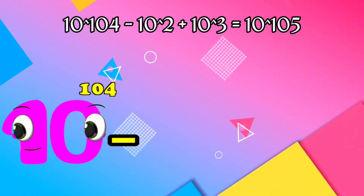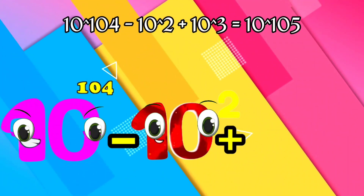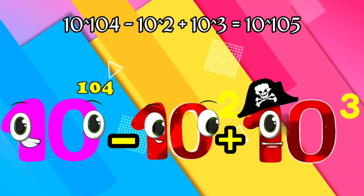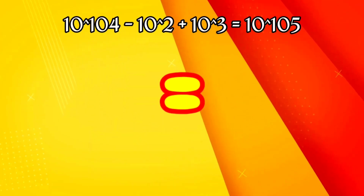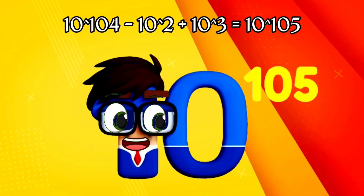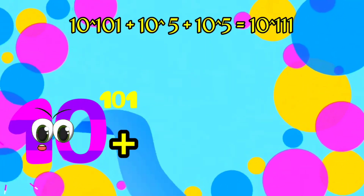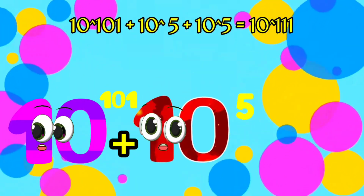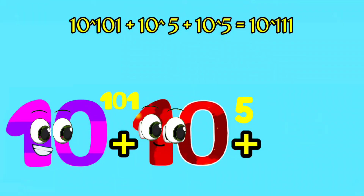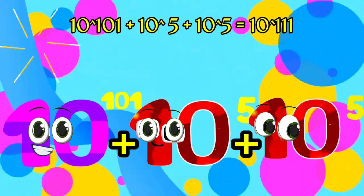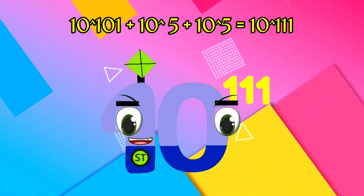I'm 100 with two zeros, plus I'm 1,000 and I've got three zeros, equals I am Googol with 100 zeros. I am Googol with 101 zeros, plus I'm 100,000 and I have five zeros. I am Googol with 100 zeros.